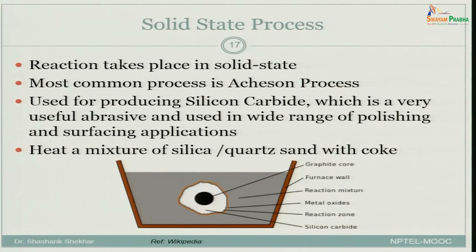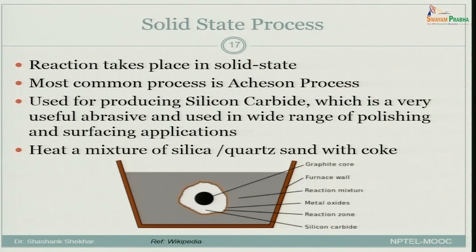Let us look at another process for manufacturing which is the solid state process, meaning the reactants are in the solid state and the product is also in the solid state. In some ways, even oxide reduction was a solid state process, but there we used hydrogen gas and the product was moisture. Here, the starting material and the reduced element are both in the solid state — everything is in the solid state.